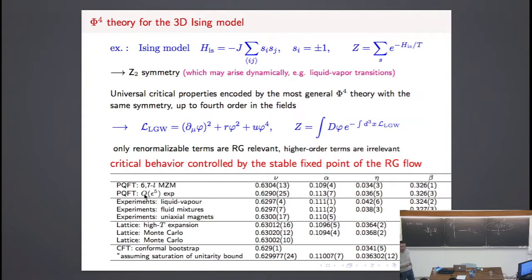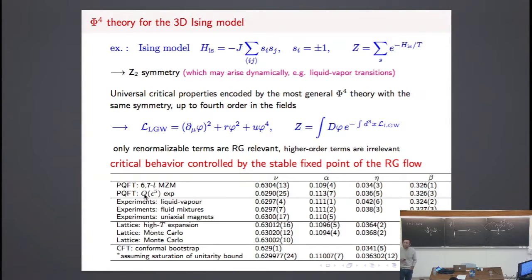These results can be compared with other approaches, in particular with experiments. These are numbers obtained from experiments on the liquid-vapor transition, fluid mixtures, and also uniaxial magnets — very different systems. All these systems give analogous numbers. Actually, the theory says that these numbers should be the same asymptotically, so we have an exact prediction.